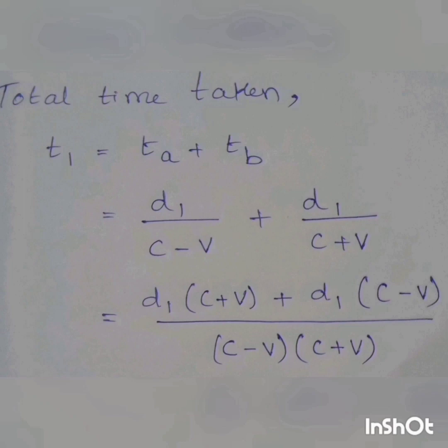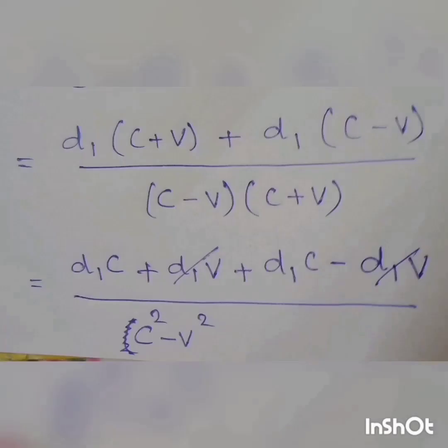So D1, let's start the derivation. We can cancel d1v. So, c minus v, c plus v — a plus b minus b — a squared minus b squared. So, c squared minus b squared. So, 2d1c. So, 2d1c.